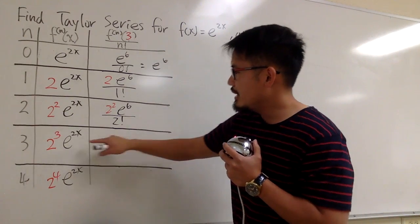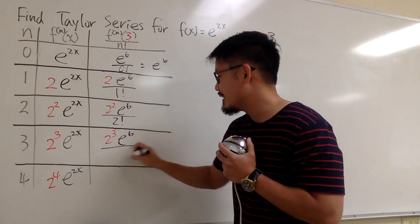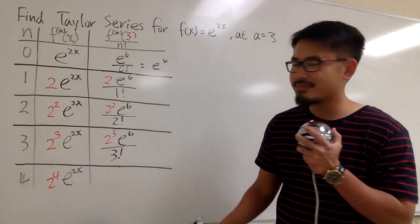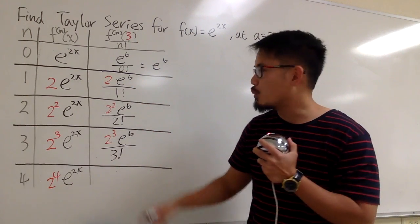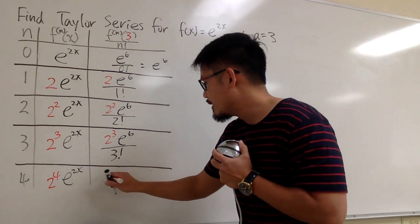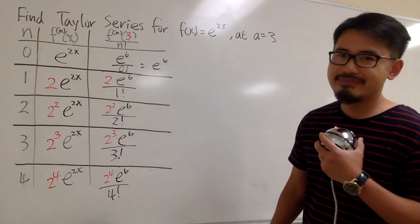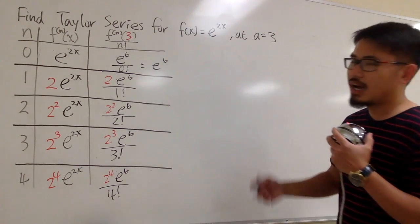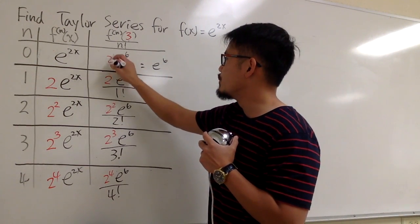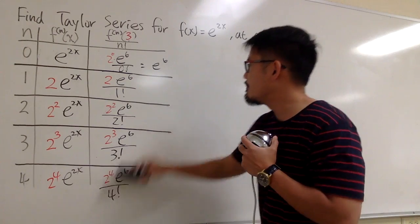For n=3, plugging in 3 gives 2 to the 3rd power times e to the 6th, divided by 3 factorial. Now you see why we don't simplify — the powers of 2 in the numerator have a nice pattern, and likewise the factorial in the denominator has a nice pattern. For the last term, n=4: 2 to the 4th power times e to the 6th over 4 factorial. The very first term can also be written as 2 to the 0th power times e to the 6th.